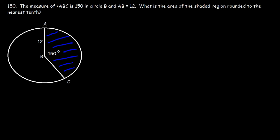Number 150. The measure of angle ABC is 150 in circle B and AB is 12. What is the area of the shaded region rounded to the nearest tenth? So we need to find the area of that portion of the circle.